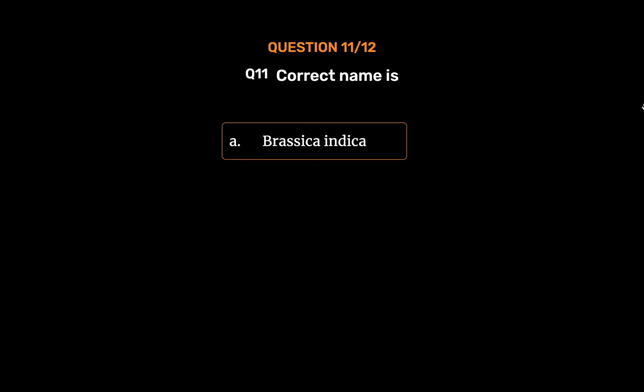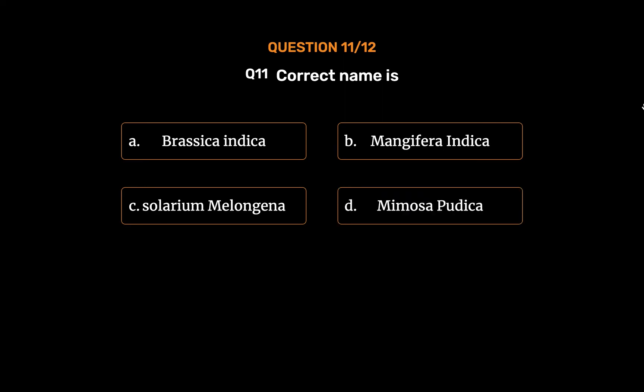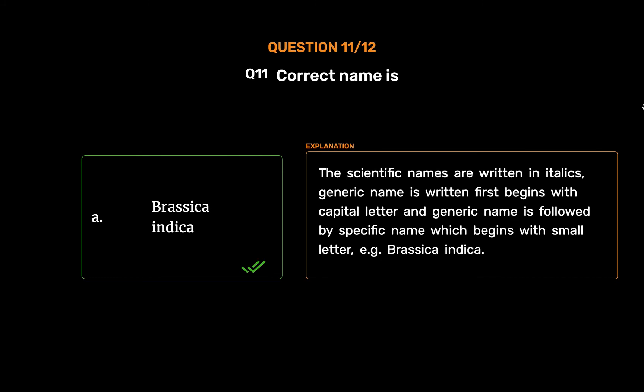Question No. 11. Correct name is. Option A: Brassica indica. Option B: Mangifera indica. Option C: Solanum melongena. Option D: Mimosa pudica. The correct answer is Option A: Brassica indica. The scientific names are written in italics. Generic name is written first and begins with a capital letter, and the generic name is followed by the specific name which begins with a small letter, for example Brassica indica.